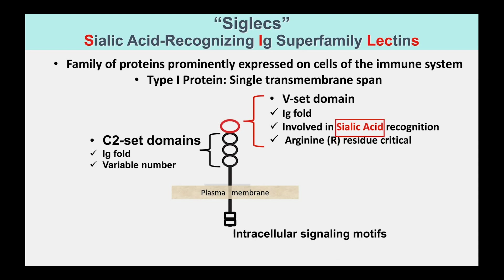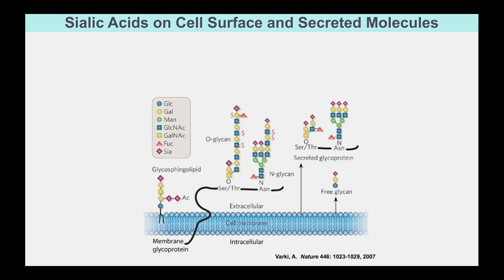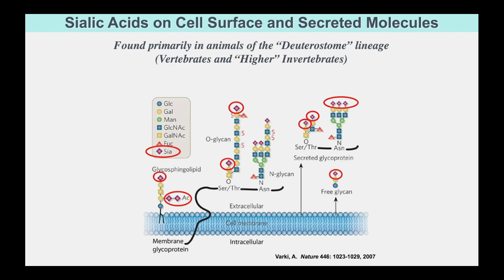What is the sialic acid that it is recognizing? Every cell in your body is covered with a dense and complex array of glycans and sugar chains, sort of like an icing on the cake. On this icing, at the outer ends, you find these sugars called sialic acids, which are sticking out at the top of the sugar chain. These molecules are primarily found in animals in the deuterostome lineage — vertebrates and animals with a backbone like humans. Curiously, these molecules are also found in certain bacterial pathogens that invade deuterostomes.